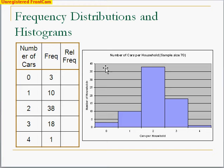And then up on the left-hand side here, the vertical axis, or the y-axis, is the number of households, the actual options we had. And we had 3, 10, 38, 18, and 1.